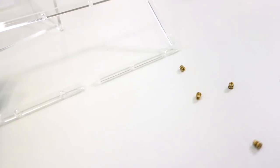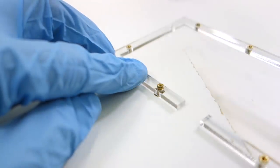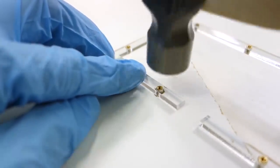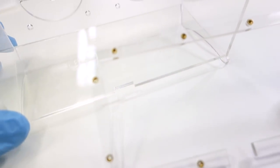I'm adding threaded inserts into a bezel to be able to add a back piece that is removable if need be once everything is mounted. The bezel is glued in the same way as the other pieces.